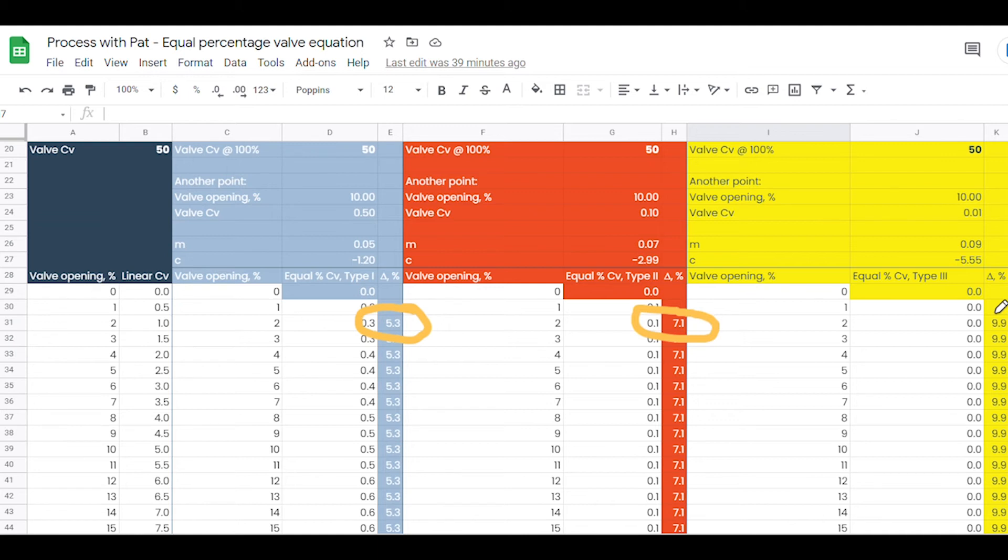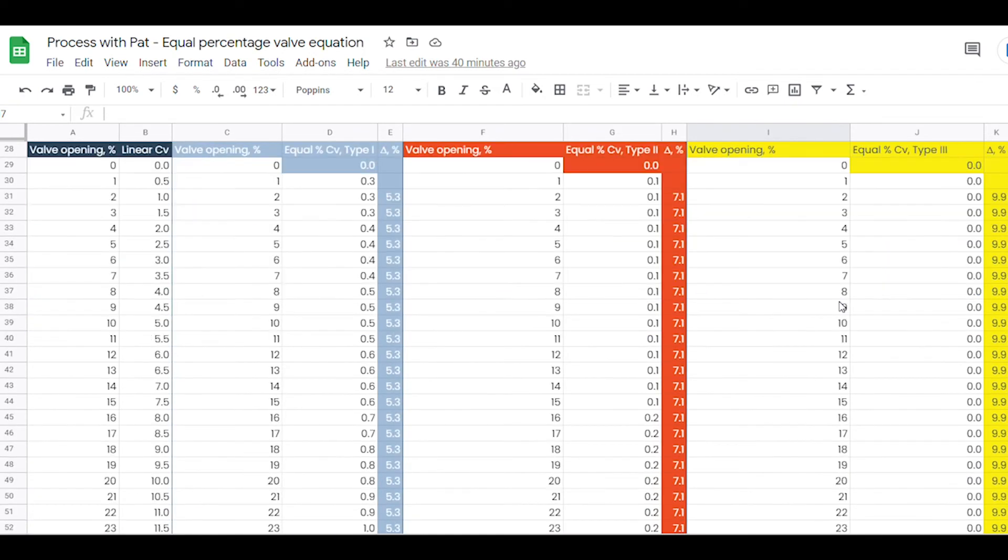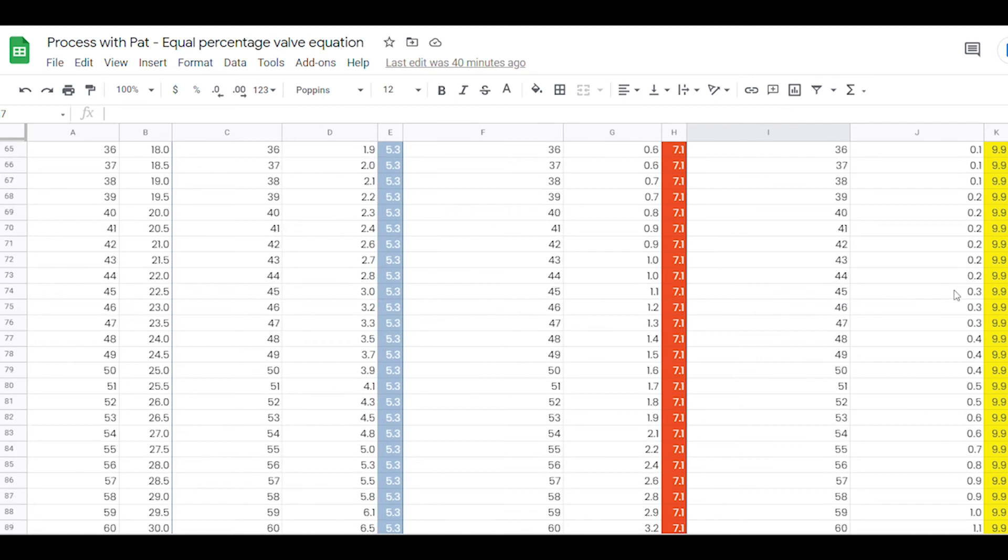And finally the third valve increases the flow by 10% for every additional percentage opening. You can see that this percentage is constant as the valve opens to 100%.